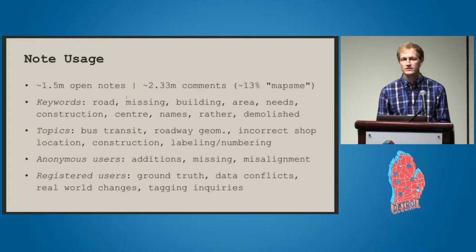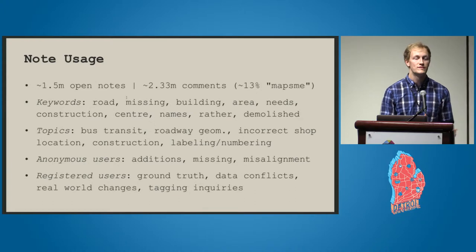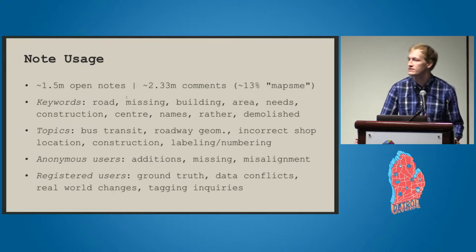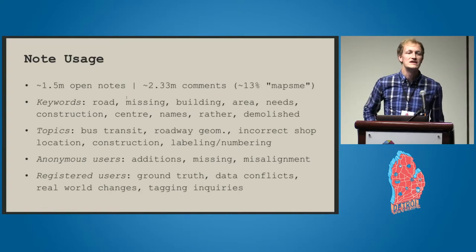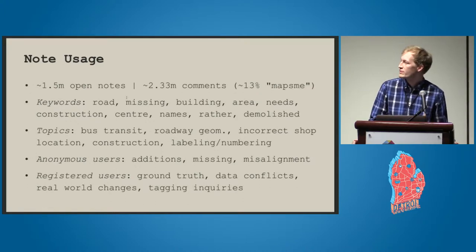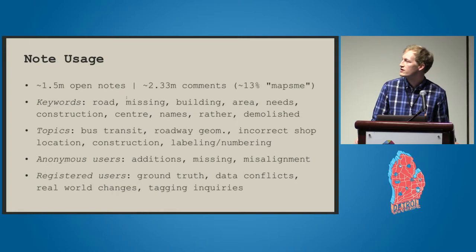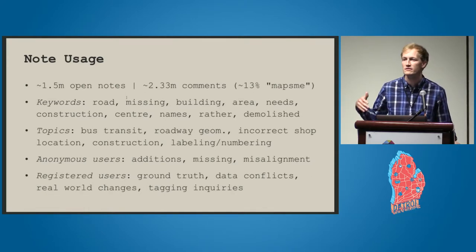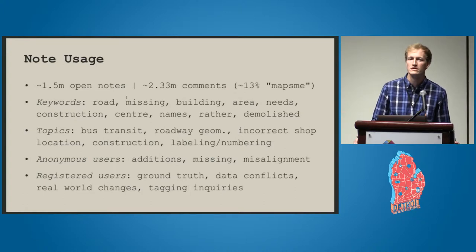More importantly, we were interested in trying to figure out what people use notes for. This is pretty crucial because if we want to improve their usage and help with collaboration, we should see what's going on with them. At this point, we have about one and a half million open notes and two and a third million comments. About 13% of them contain the text 'maps.me', as well as an even higher percentage with other templated strings — so we know that notes are coming from a lot of different sources besides just through the editors.